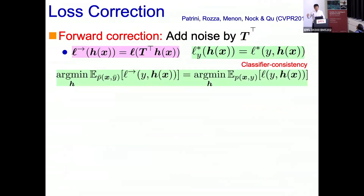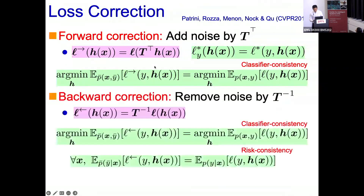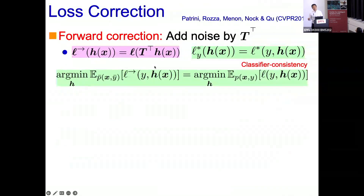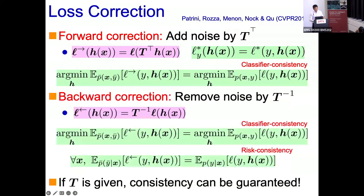A key paper was proposed by Patrini et al. at CVPR 2017. They proposed systematic loss correction methods to handle noisy labels — a really excellent paper. The first method is called forward correction: the matrix T plays the role of adding noise, so they apply T transpose to the classifier h to emulate the noisy output of the classifier. This can be matched with noisy labels in a consistent way, achieving so-called classifier consistency — the minimizer of the clean loss equals the minimizer of the noisy forward-corrected loss.